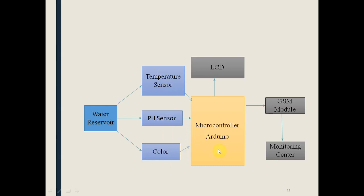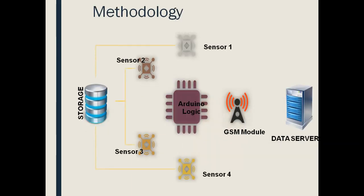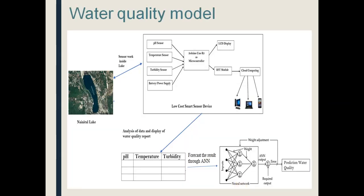The sensor data goes to a microcontroller, and the LCD panel of the microcontroller displays the values of these parameters. Through a GSM module, the data is sent to the monitoring centre. We have used Arduino Uno, and through the GSM shield the data is sent to the central server. Different sensors are attached to the Arduino.